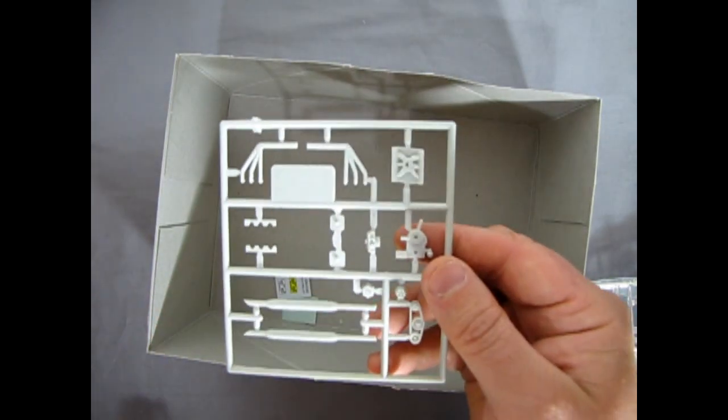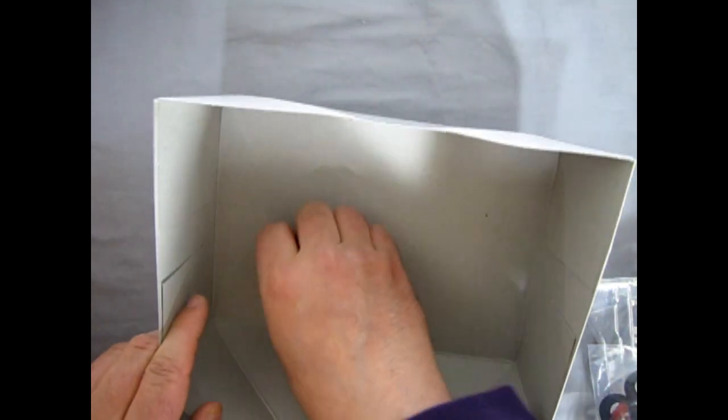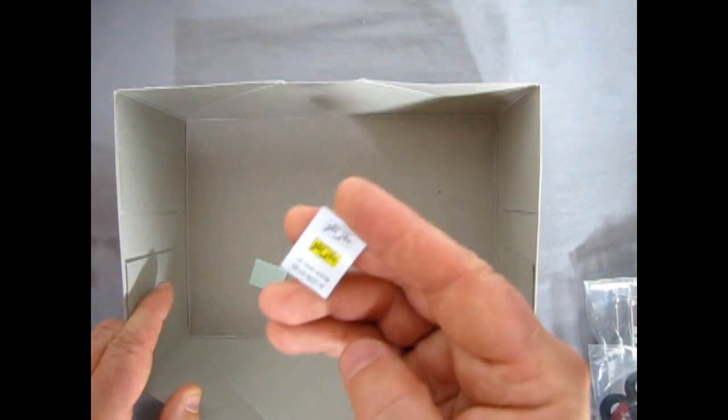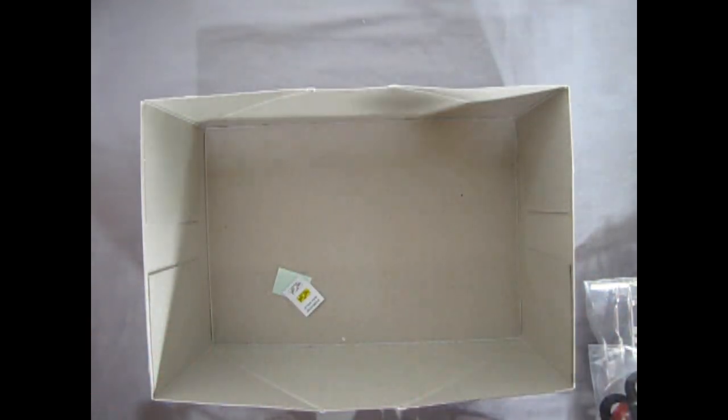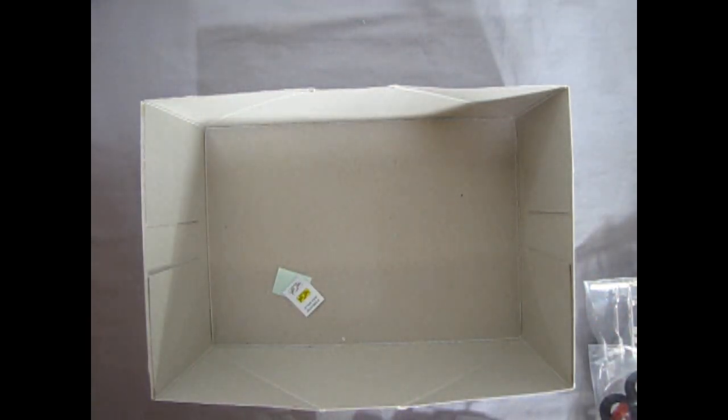Then we have our rear suspension here with the exhaust molded in. And then some engine components. And way in the bottom we have license plate decals. And we'll take a look at all this as we go through. So let me clear this out of the way. And then we'll look at those plastic parts.